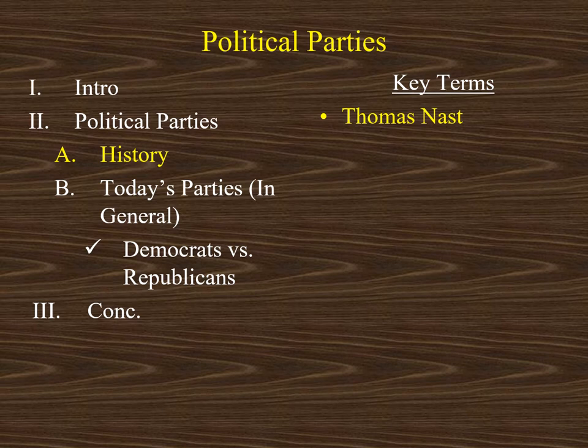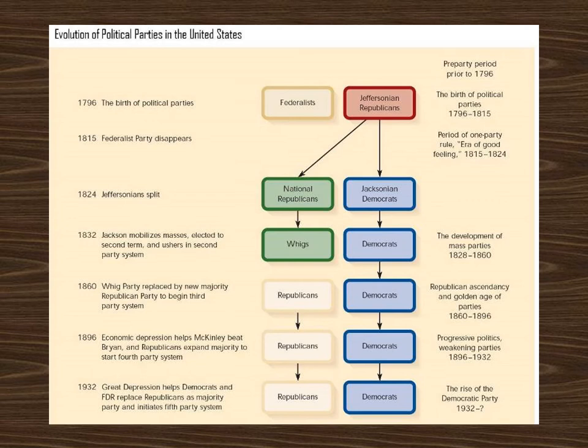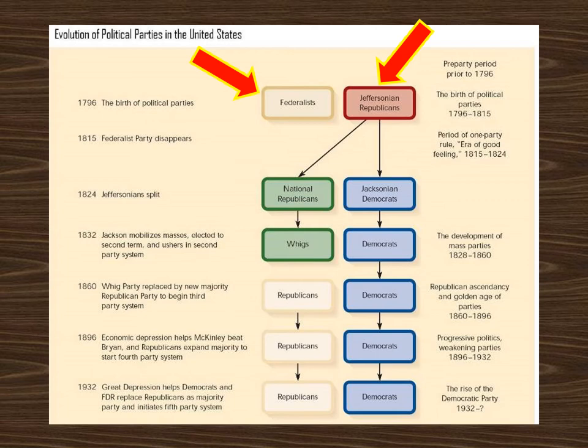We'll start with a little bit of history. Throughout American history, our political system has been dominated by a two-party system. But a lot of people are unfamiliar with the fact that the Democratic and Republican parties have not been the only political parties throughout American history. In the 1790s, there were two political parties: one was called the Federalists, the other was called the Jeffersonian Republicans — sometimes also referred to as the Democratic Republicans. For the last 150 years or so, the Democrats and Republicans have been the two major parties.